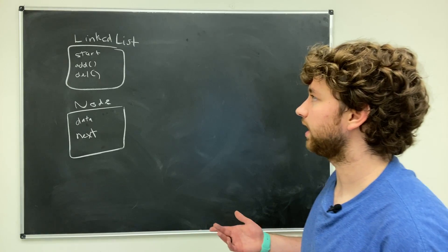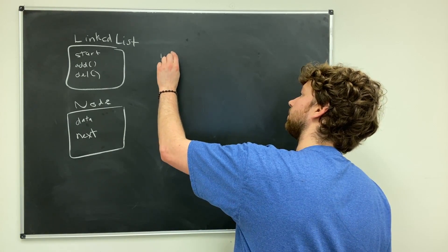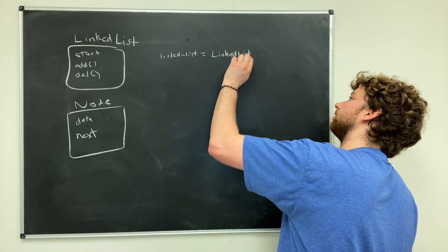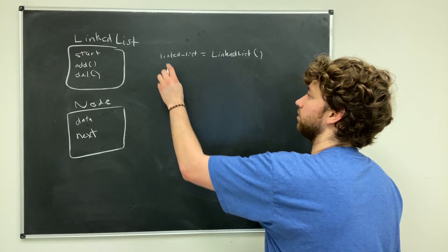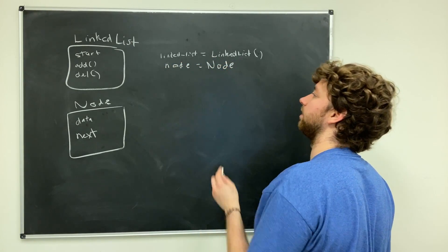And now to create linked lists and nodes, here's how you would do it. Create a variable: linked_list is a linked_list. Here we could create a node like so.